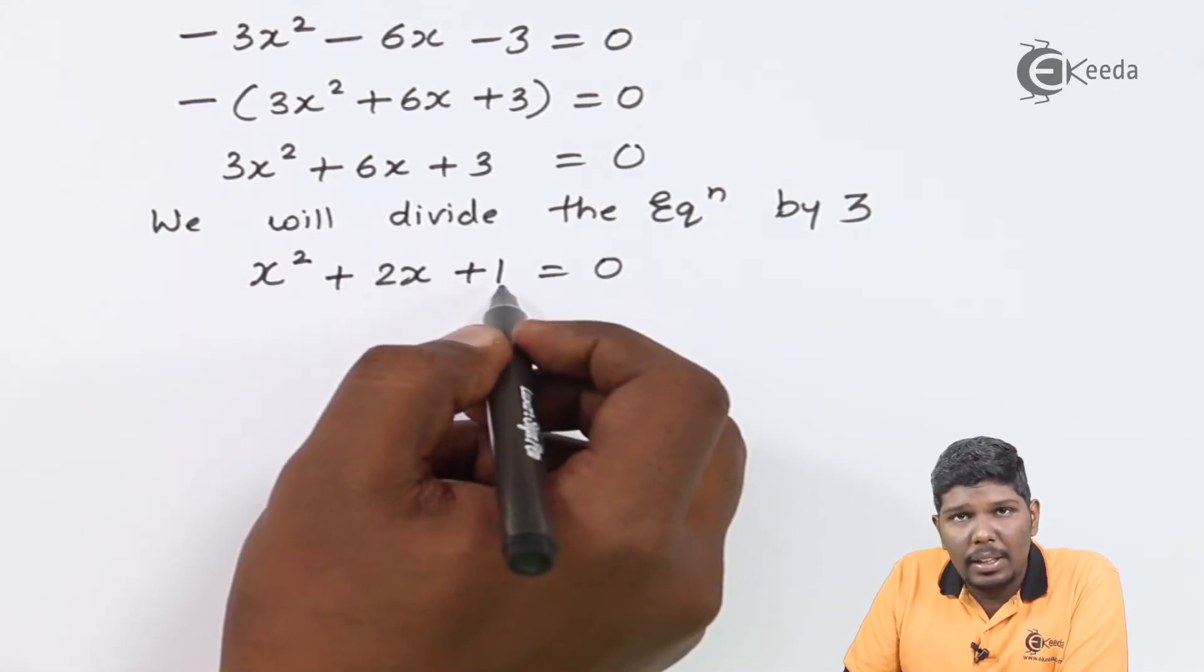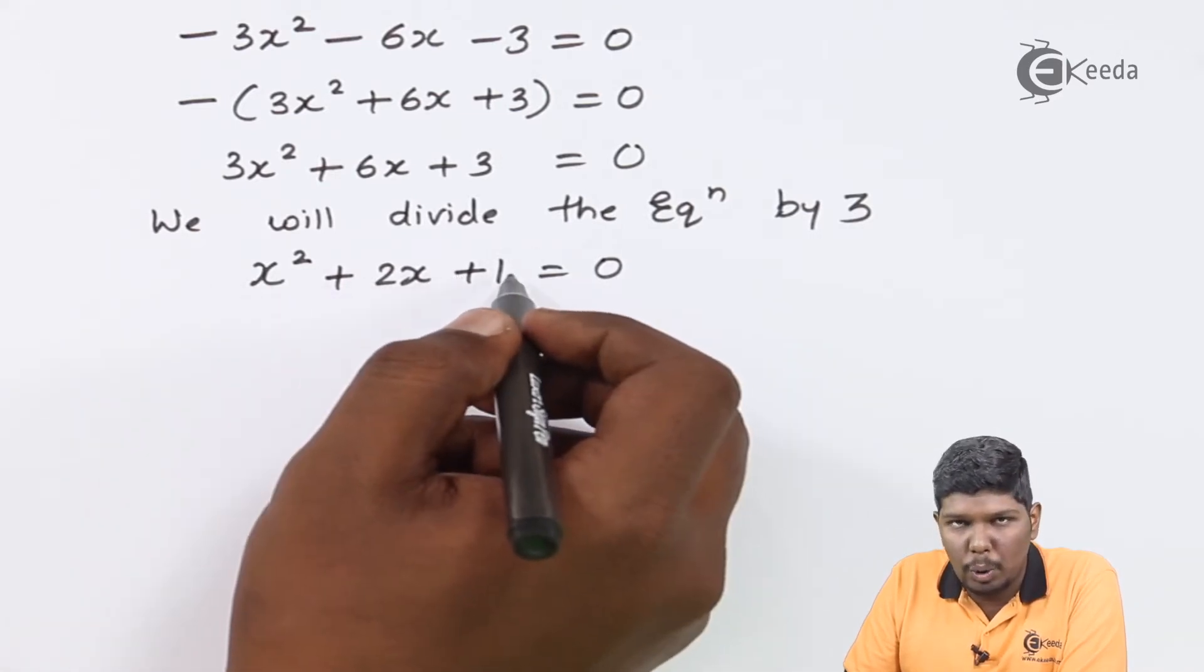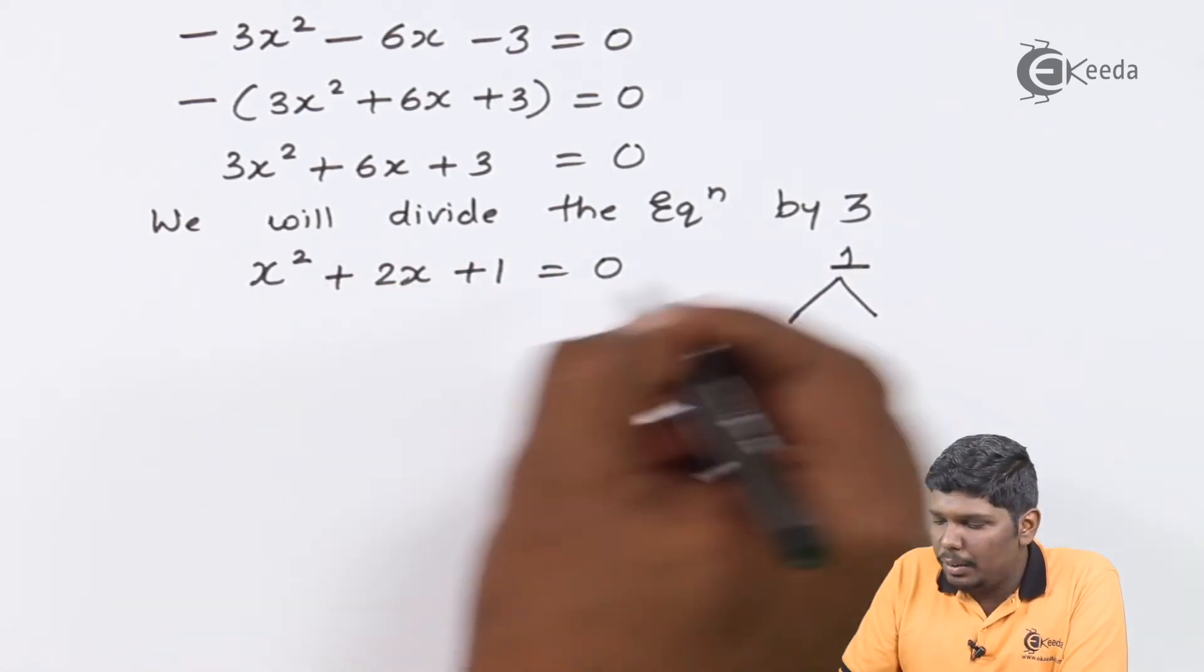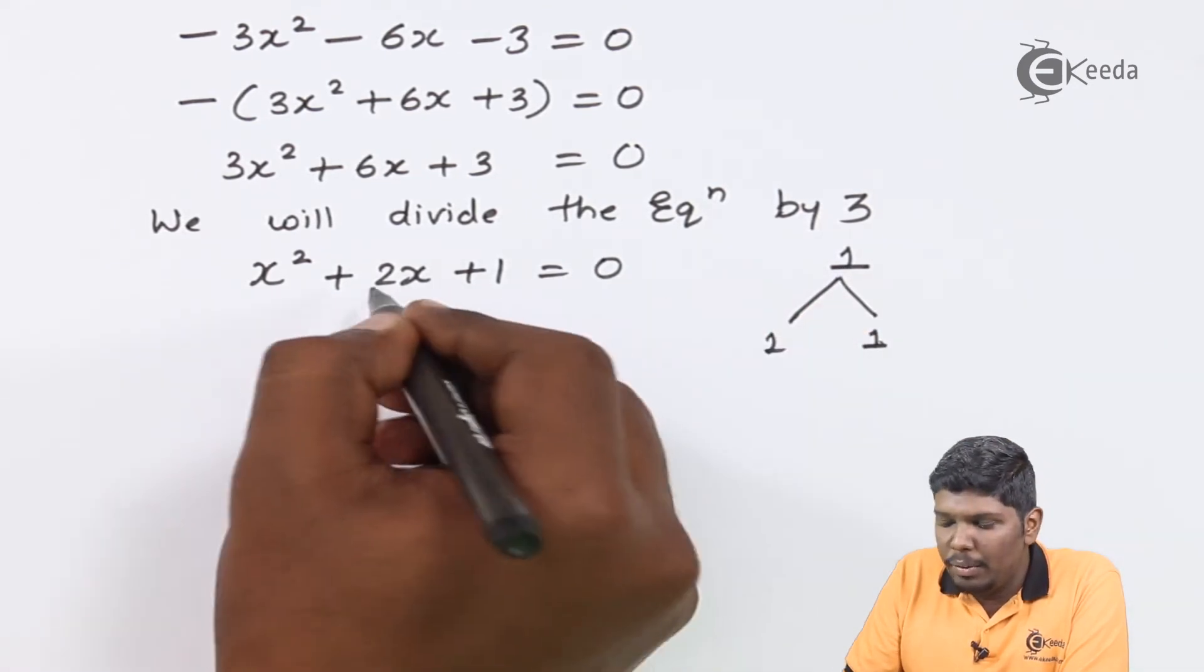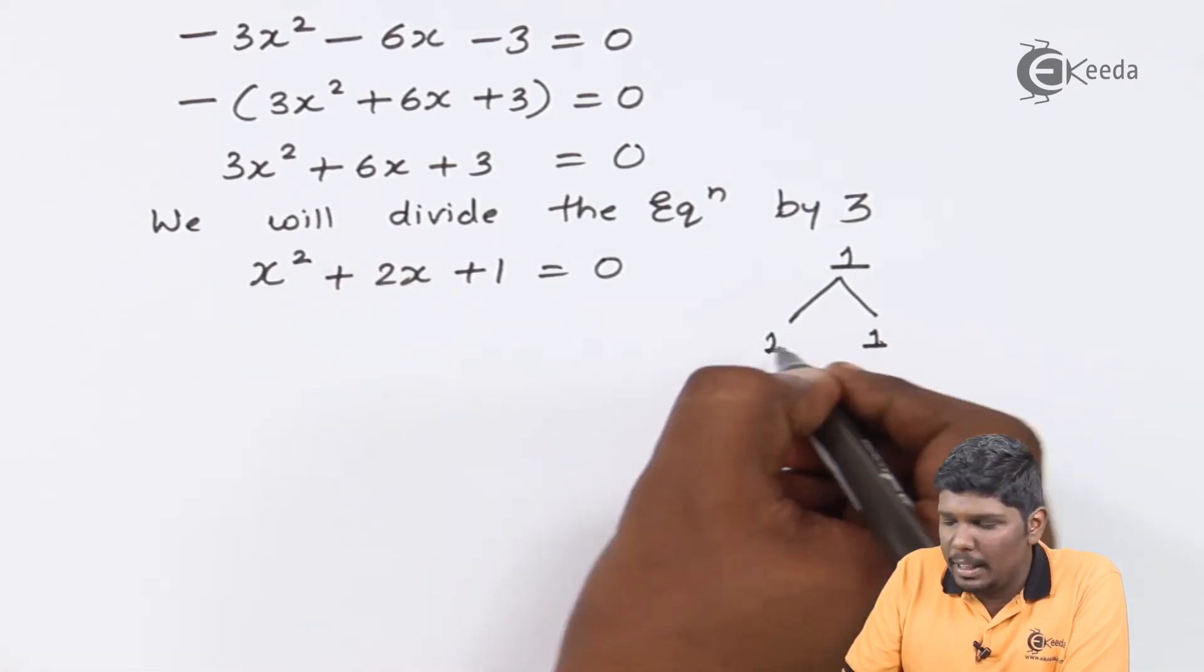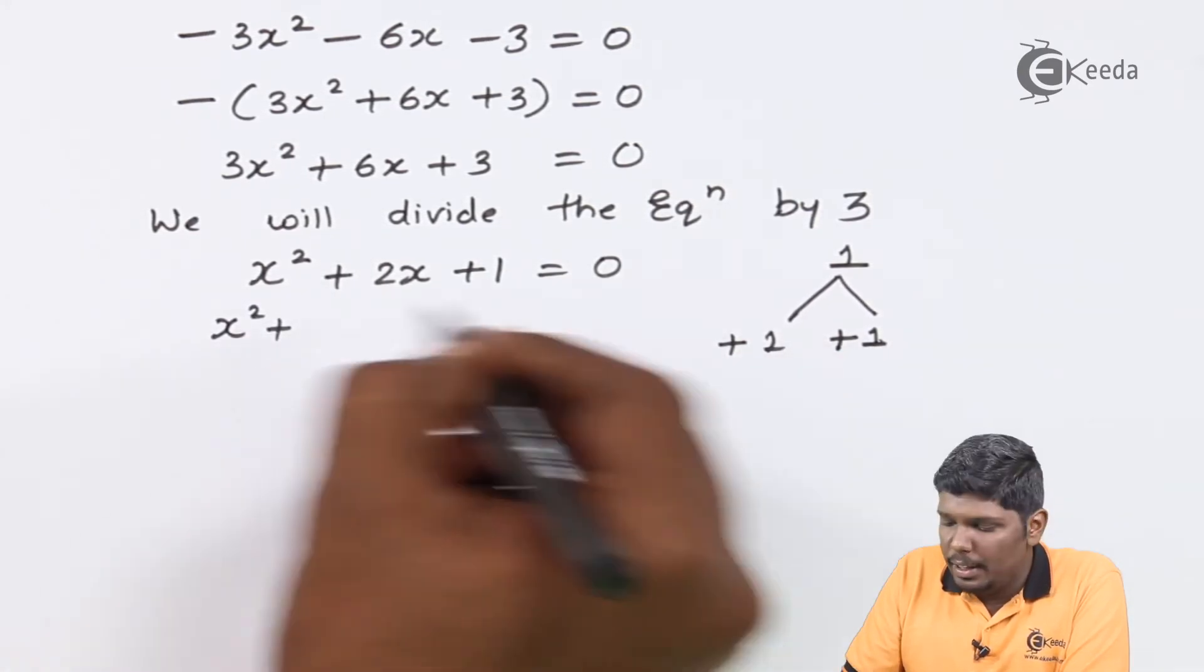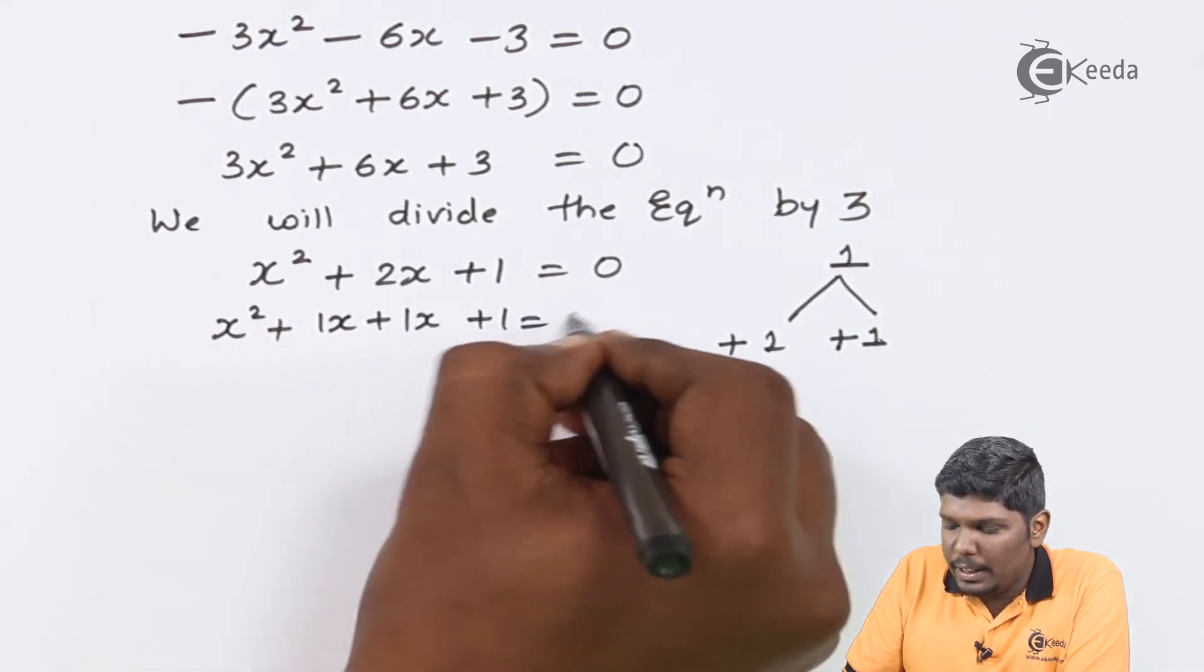So if you factorize further, this equation, if you know, this expansion is nothing but (x+1)². Or simply you can say the product we are going to get is 1, and the two factors for 1 will be 1 and 1 itself. So 1·1 = 1 and 1+1 = 2. So x², both will get x. So this becomes x(x+1) + 1(x+1) = 0.